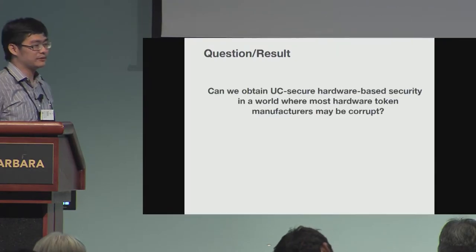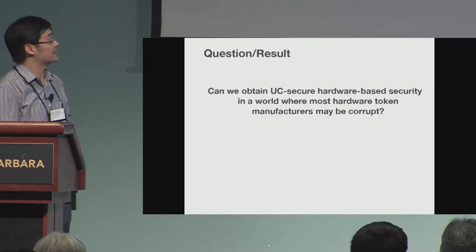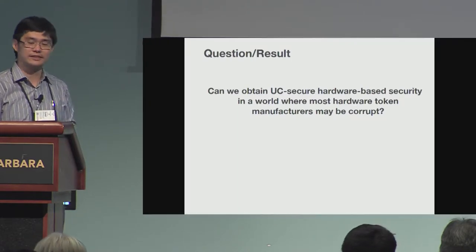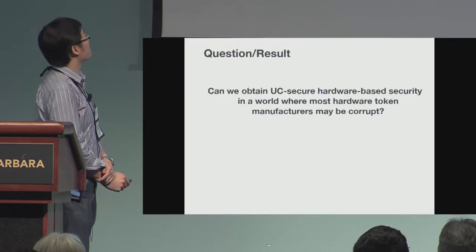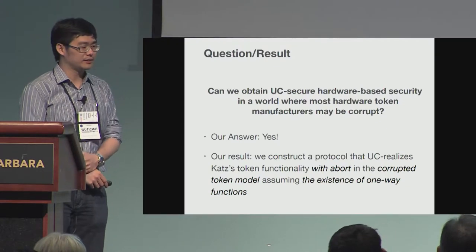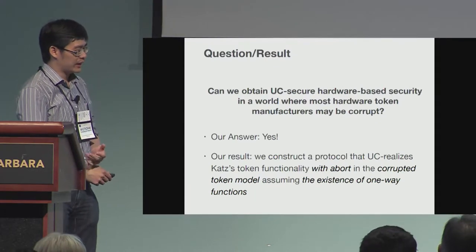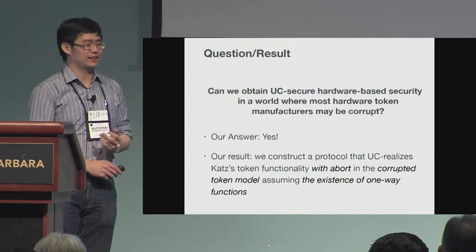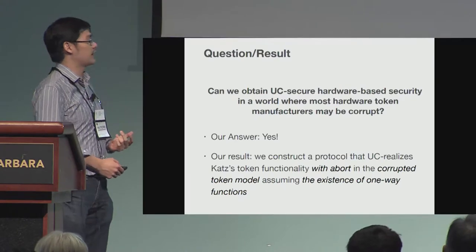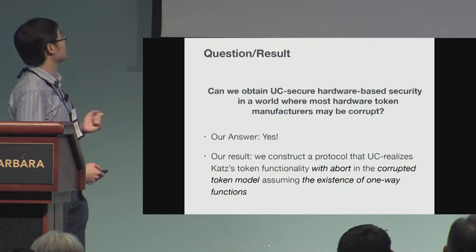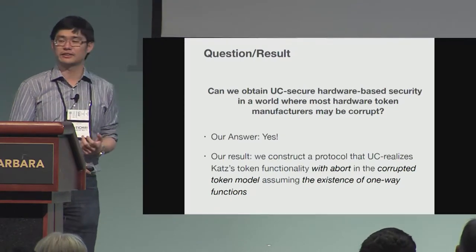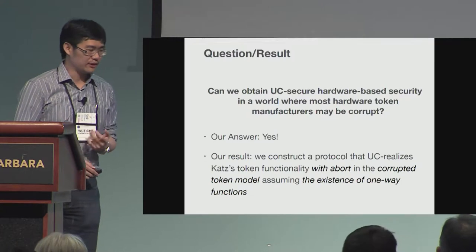So the question we would like to answer is: can we obtain UC security hardware-based security in a world where most hardware token manufacturers can be corrupt? Our answer is yes. We construct a protocol that UC realizes the tamper-proof token functionality with abort in the corrupted token model, assuming the existence of a one-way function. This is our main result, and we need to explain what is the token functionality with abort and the corrupted token model.